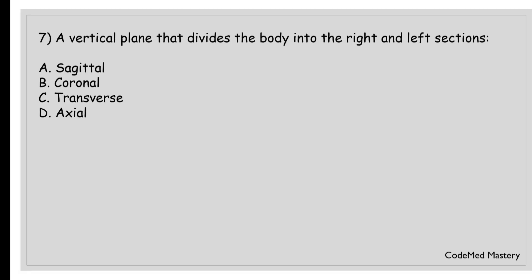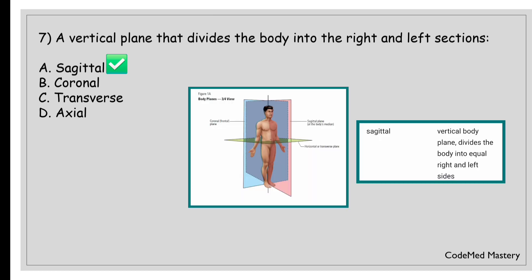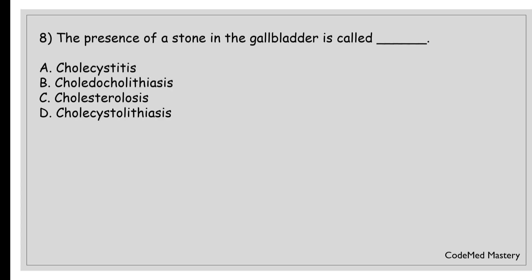Next question: a vertical plane that divides the body into right and left sections is: option A, sagittal; option B, coronal; option C, transverse; option D, axial. The right answer is option A, sagittal. A sagittal plane is a vertical plane that divides the body into right and left sections. In your CPT manual under the illustrated anatomical and procedural review, you can find a diagram with the explanation that a vertical plane dividing the body into right and left sections is sagittal.